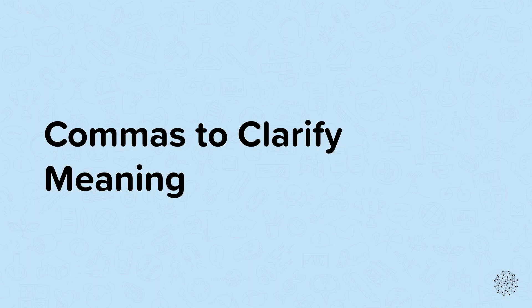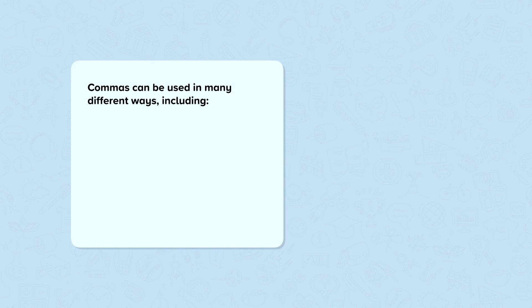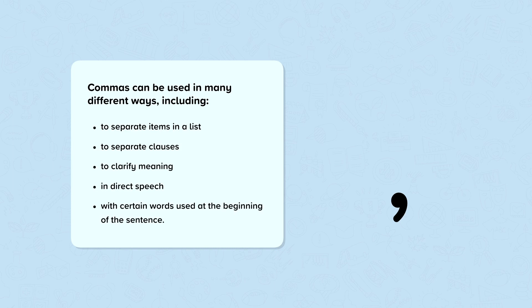Commas to clarify meaning. Commas can be used in many different ways, including to separate items in a list, to separate clauses, to clarify meaning, in direct speech, and with certain words used at the beginning of a sentence.